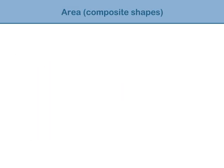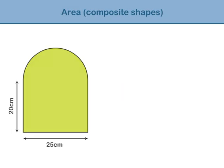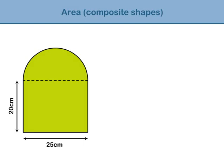Here is a second example of a composite shape. This shape is made from a half circle and a rectangle. As before, we need to break the shape into smaller parts before we can calculate its total area.